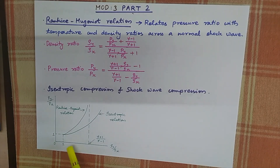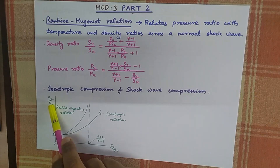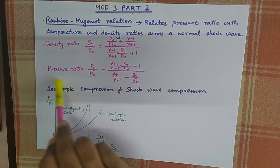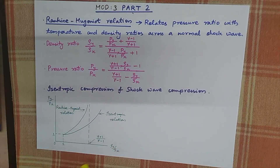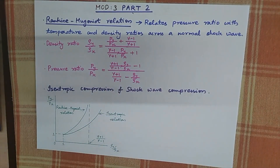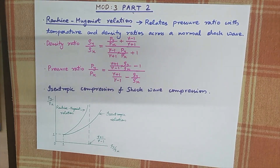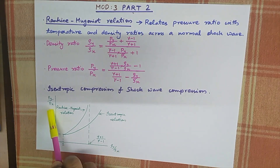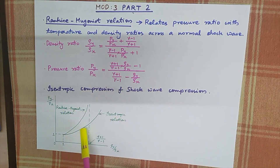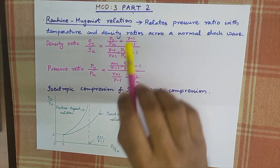For a particular density ratio, the pressure ratio is always higher for shock waves than the corresponding isentropic flow. That is, for a given density ratio, the pressure ratio across a normal shock is always greater than the corresponding isentropic value.